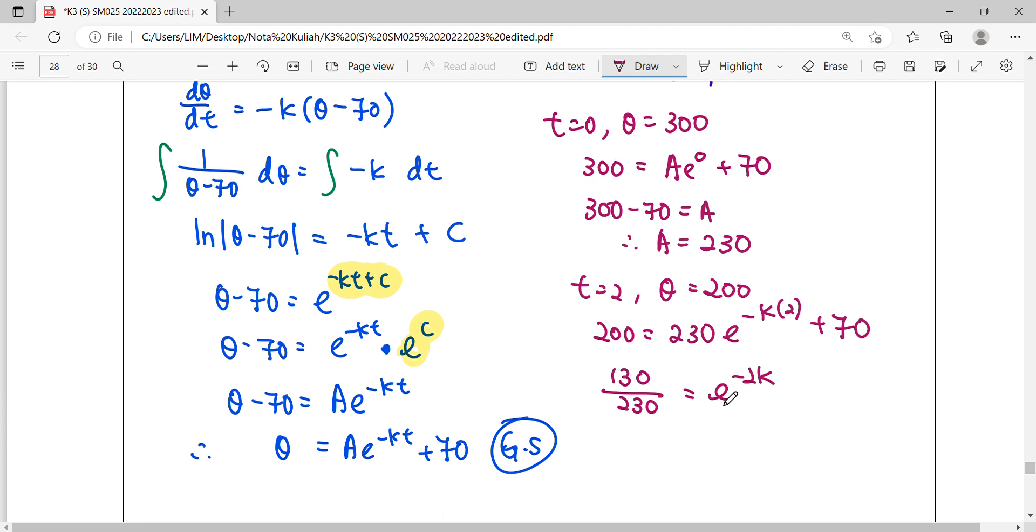Move the exponent back to the left hand side using natural log. Simplify: 130 over 230 becomes 13/23. So K equals 1 over -2 times ln(13/23), and we can get our particular solution.